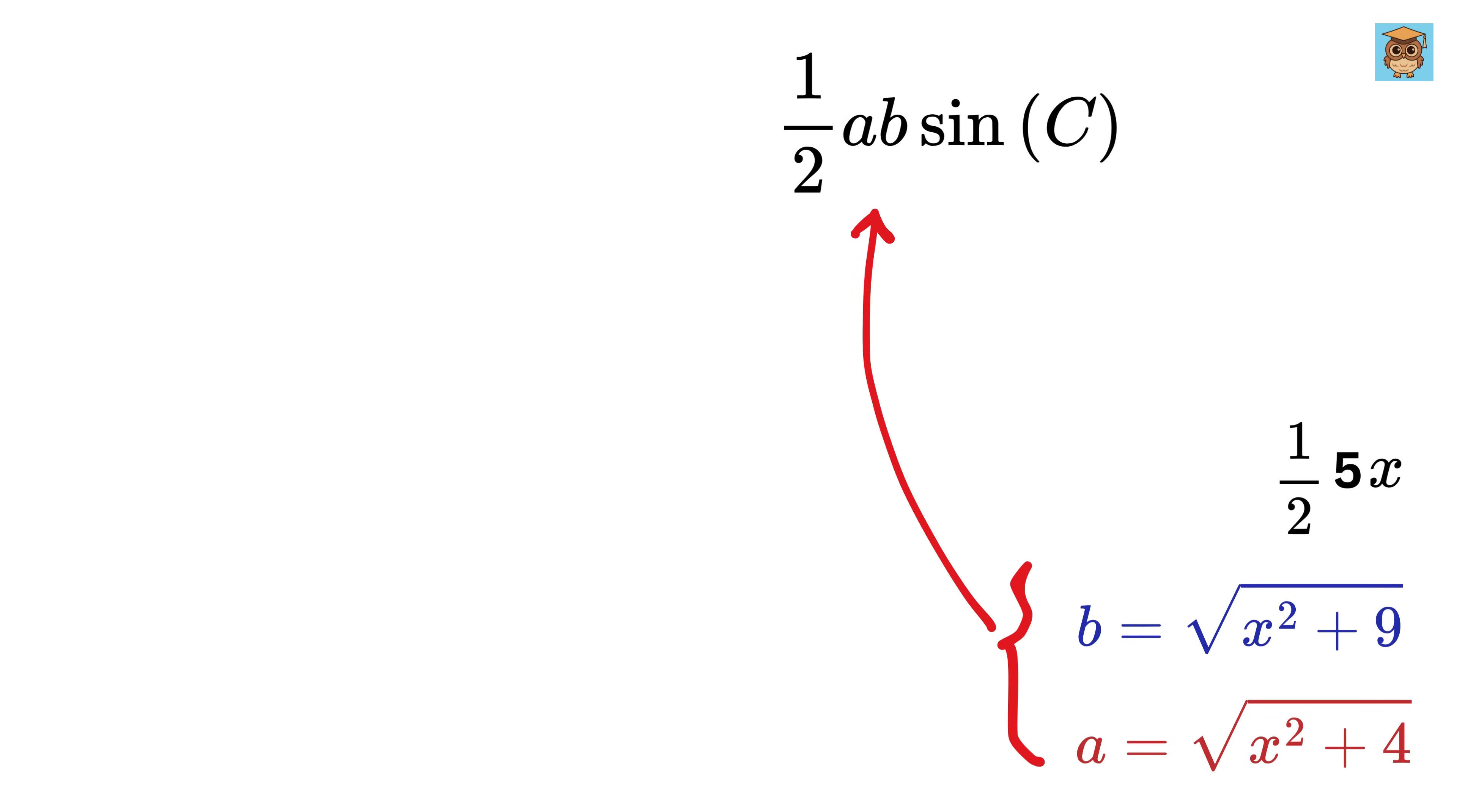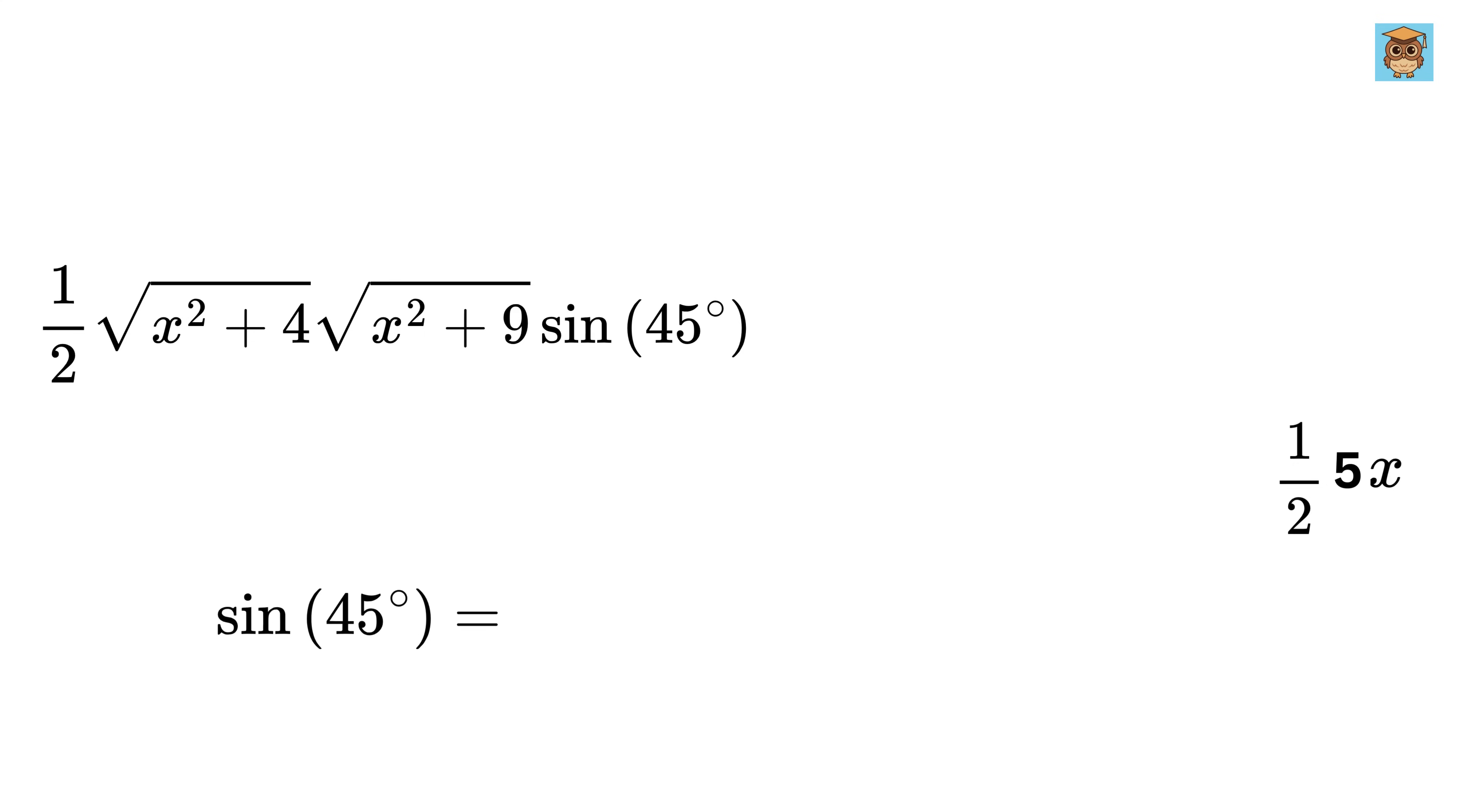Substitute a and b from here and put C as 45 degrees to get the area of this triangle. We have sine 45 equals 1 over root 2, so put it here.